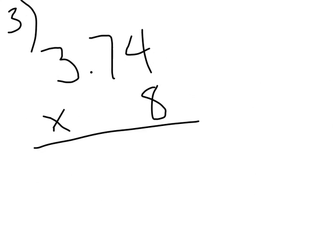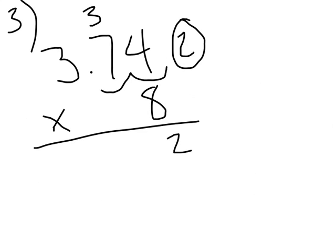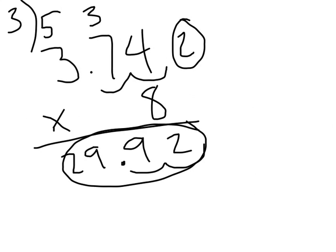Now let's try some problems without using our pattern. How many numbers will be behind the decimal in this question? 1, 2 will be behind the decimal. Now I can multiply like normal. What's 374 times 8? 8 times 4 is 32, 8 times 7 is 56, plus 3 more is 59, 8 times 3 is 24, plus 5 is 29. 374 times 8 is 2,992. Where should I place the decimal to correctly write my product? It should go between the two 9's — there's 1, 2 numbers behind the decimal. So the answer is 29 and 92 hundredths.